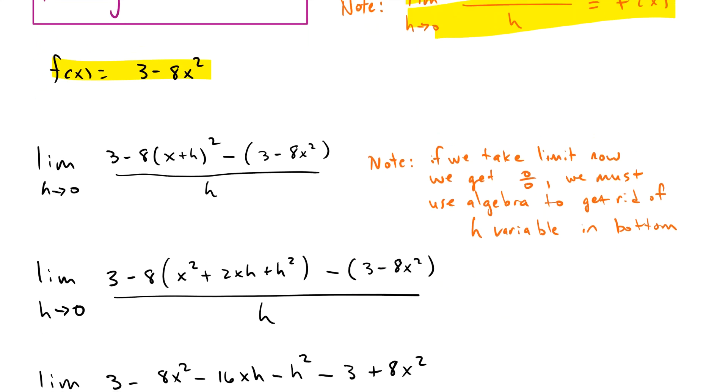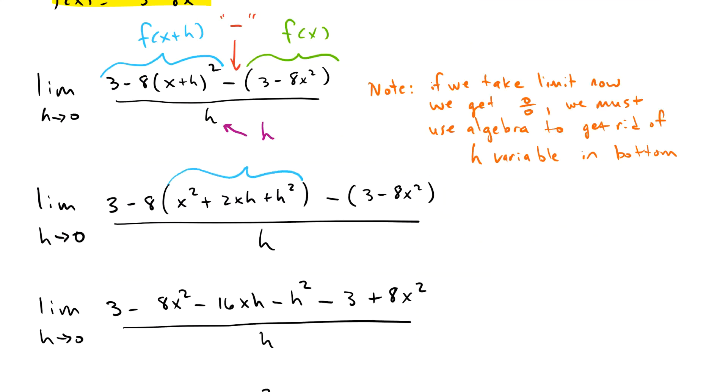This right here is f of x plus h. This quantity here is f of x and we have our minus sign in between. And then in our denominator, we have the h. This quantity here is what we get when we take x plus h and square it. It's a foiling problem and we have x plus h times x plus h. That gives us x squared plus 2xh plus h squared.